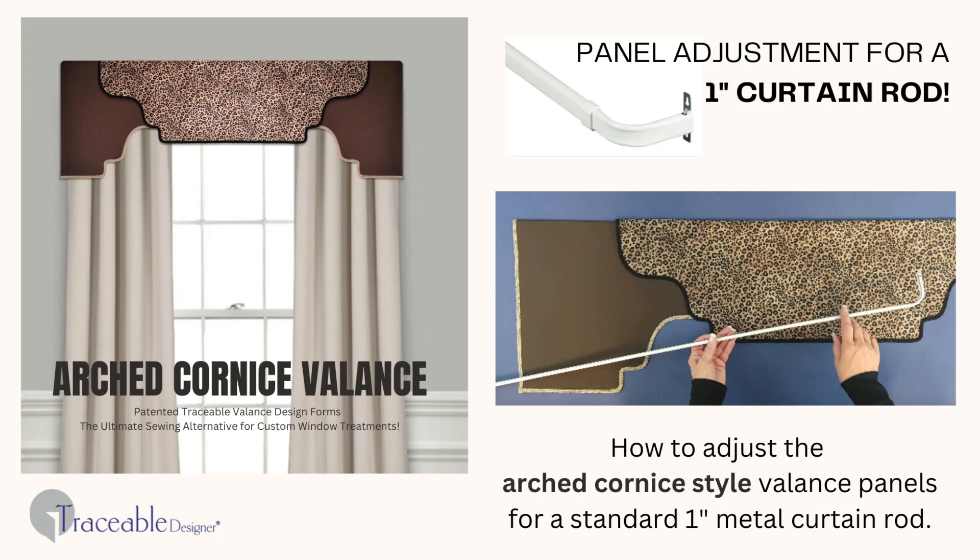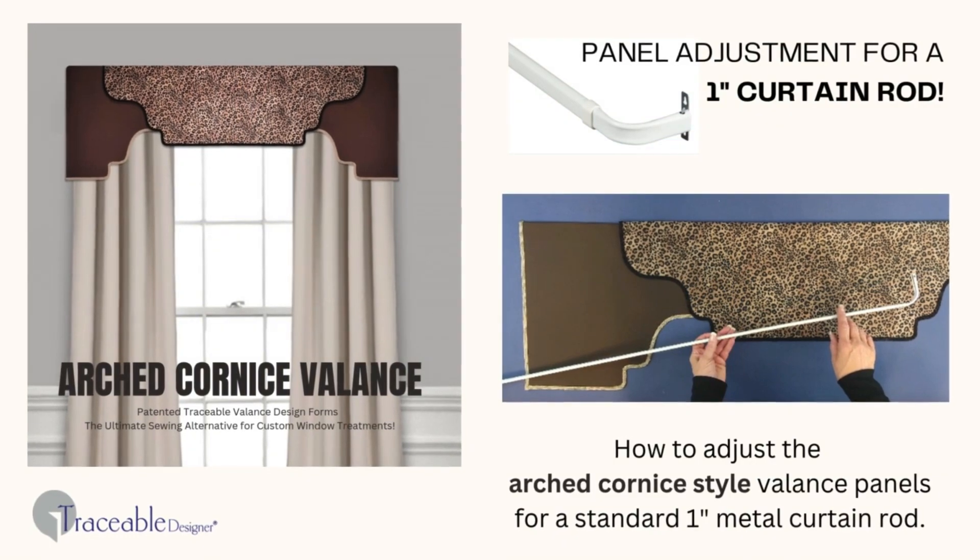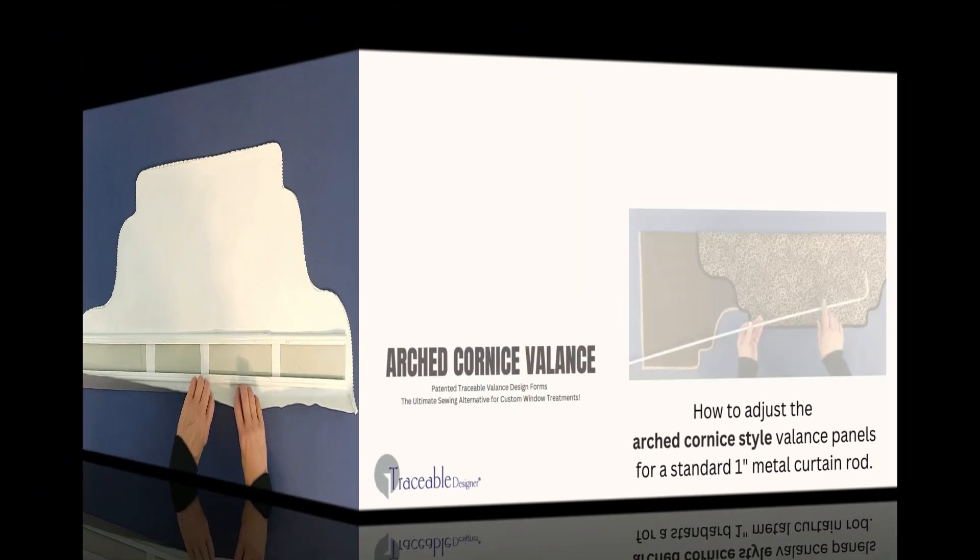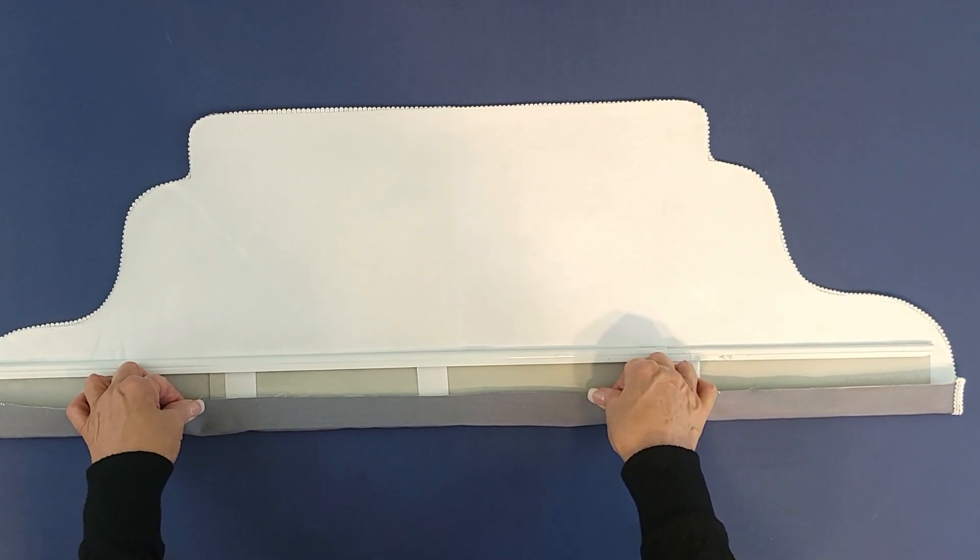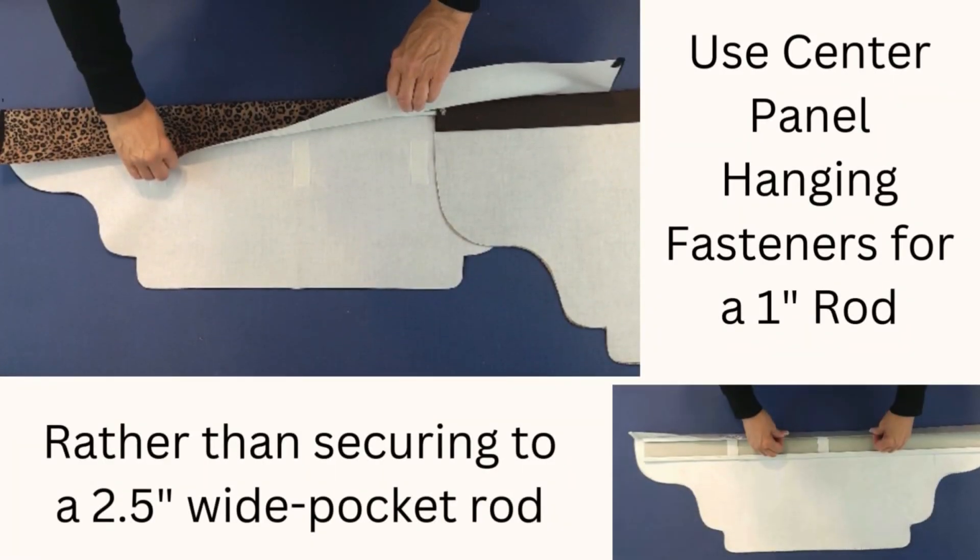Welcome Traceable Designers. Today I'll show you an easy way to hang the arched corner style valance using a 1-inch metal curtain rod. Typically this valance is hung using a 2.5-inch wide pocket curtain rod, but we're going to make fasteners so we can hang it using the 1-inch rod.